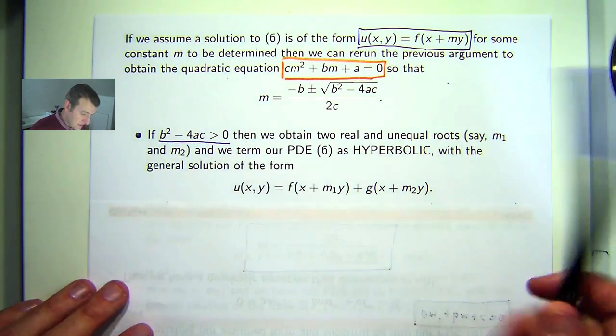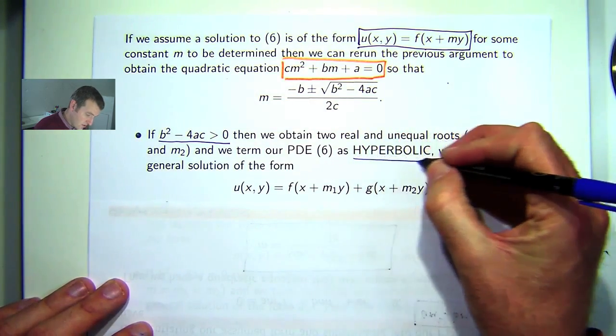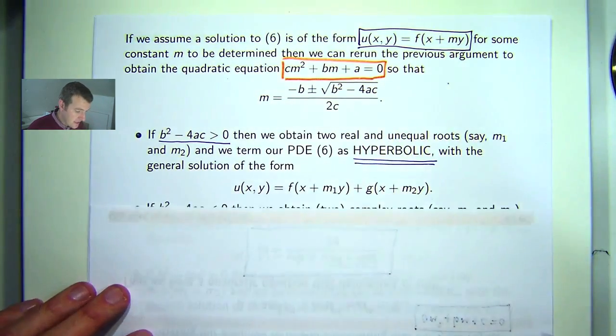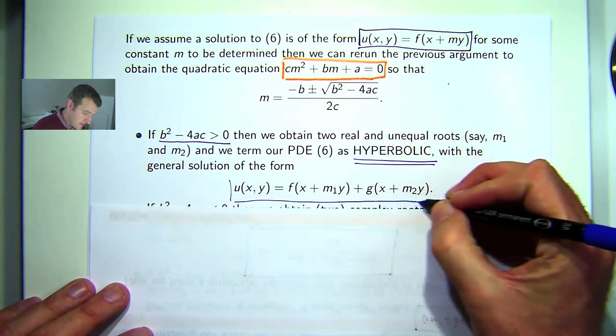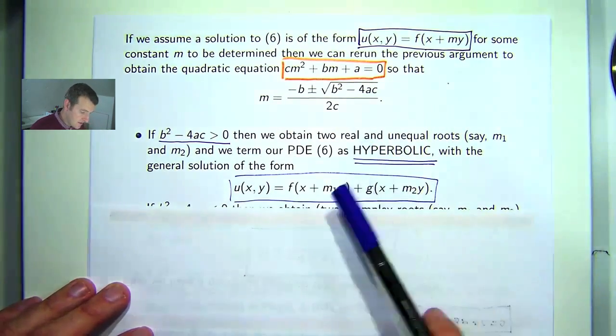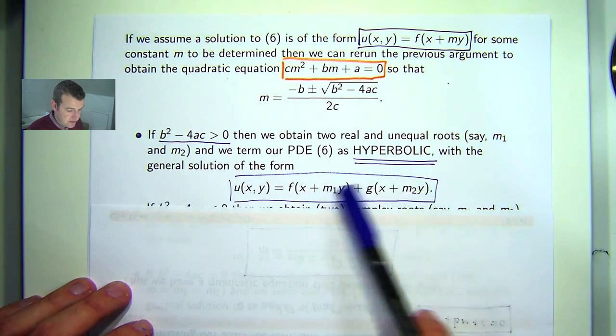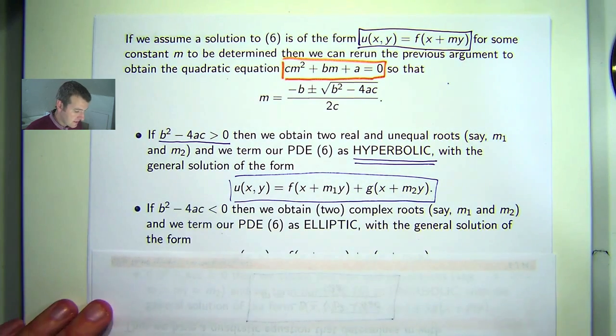And similarly to the previous case where we looked at F of Mx plus Y, if the discriminant is positive, then we obtain two real and equal roots. We term the PDE as hyperbolic. But the form of our solution, based on this form, is the following. So the roots then are coefficients of the Ys.